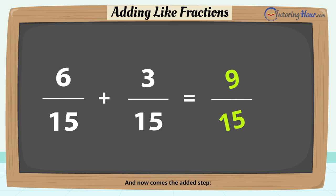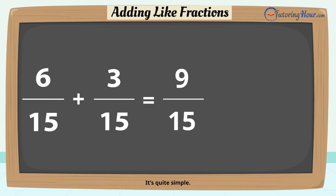And now comes the added step. Look at this fraction, 9 over 15. This can be reduced, meaning it can be simplified to the lowest terms. You may ask how. It's quite simple. Factor the numerator and the denominator.